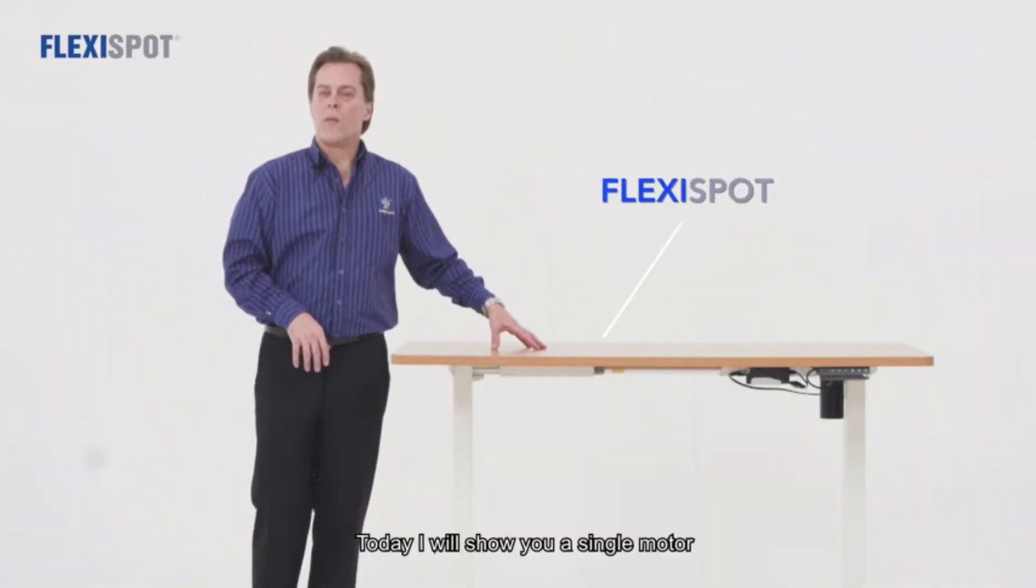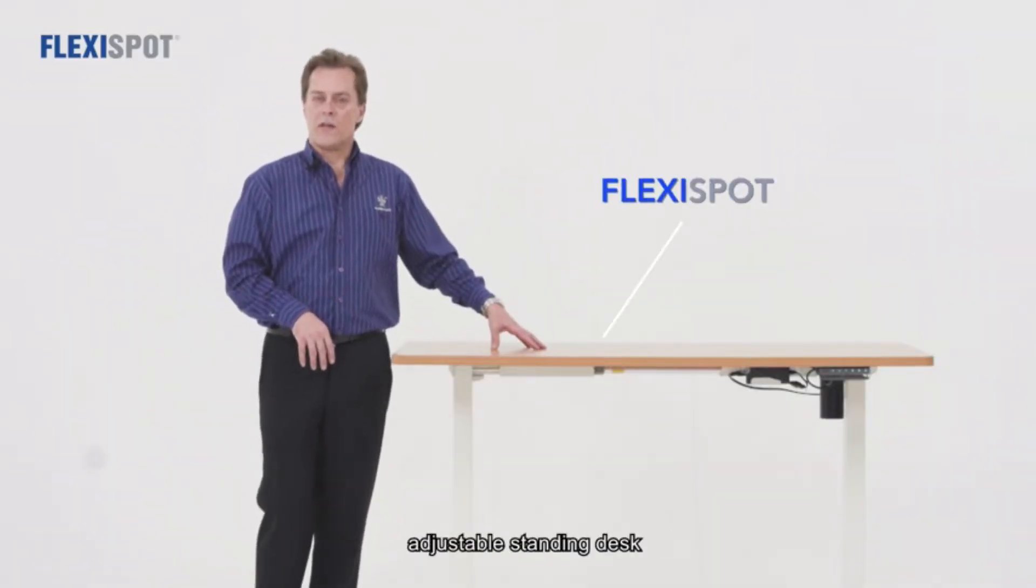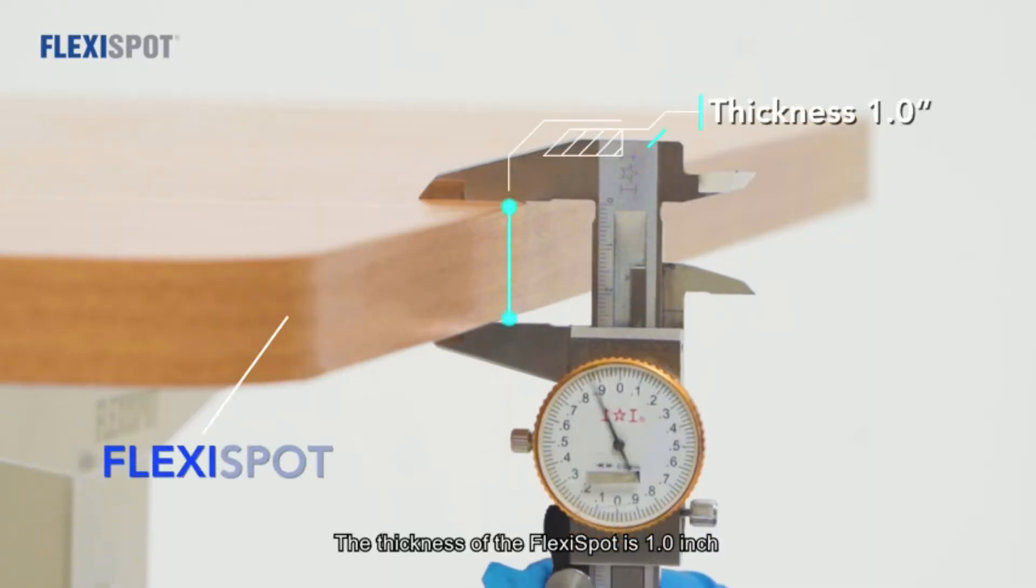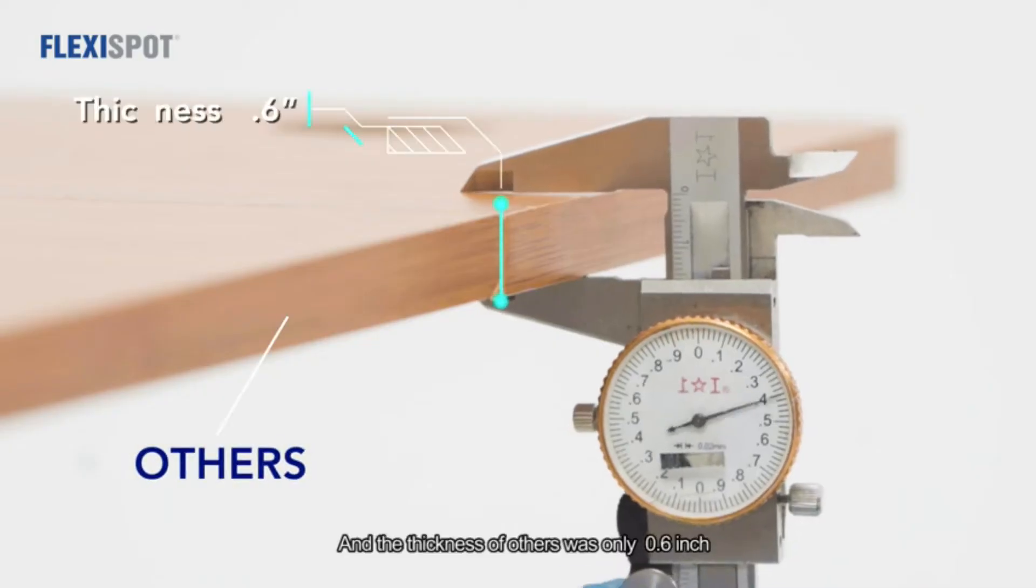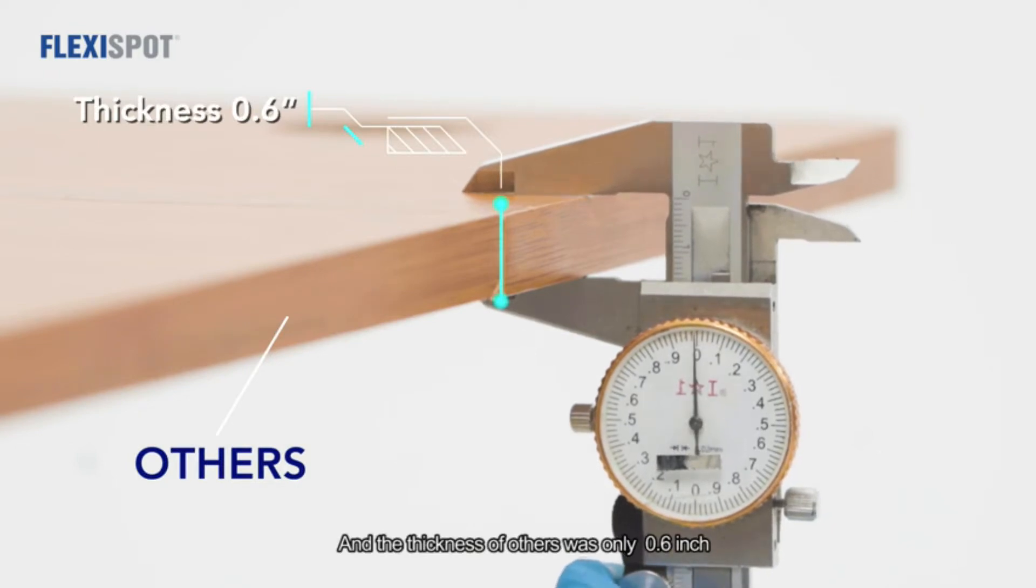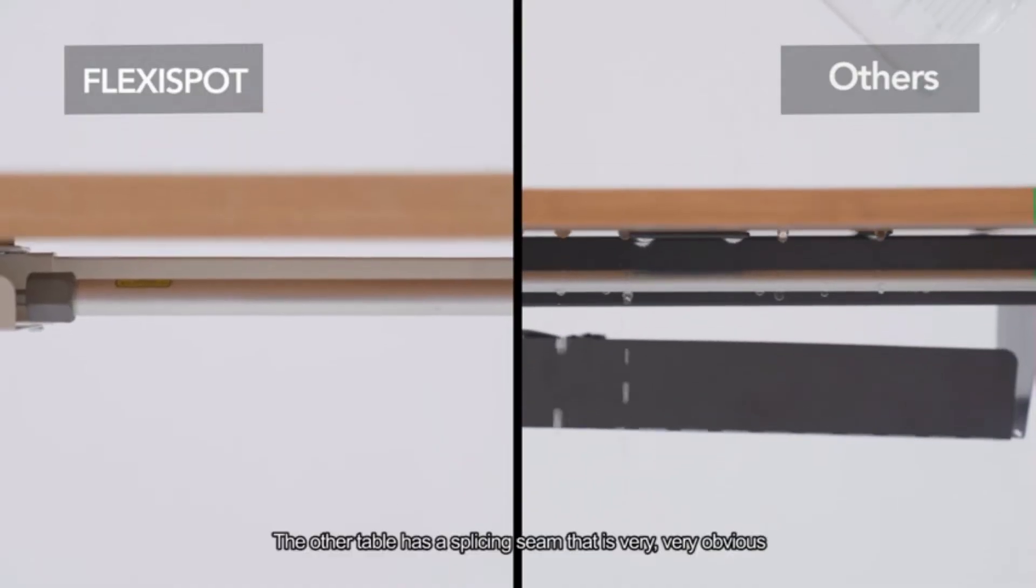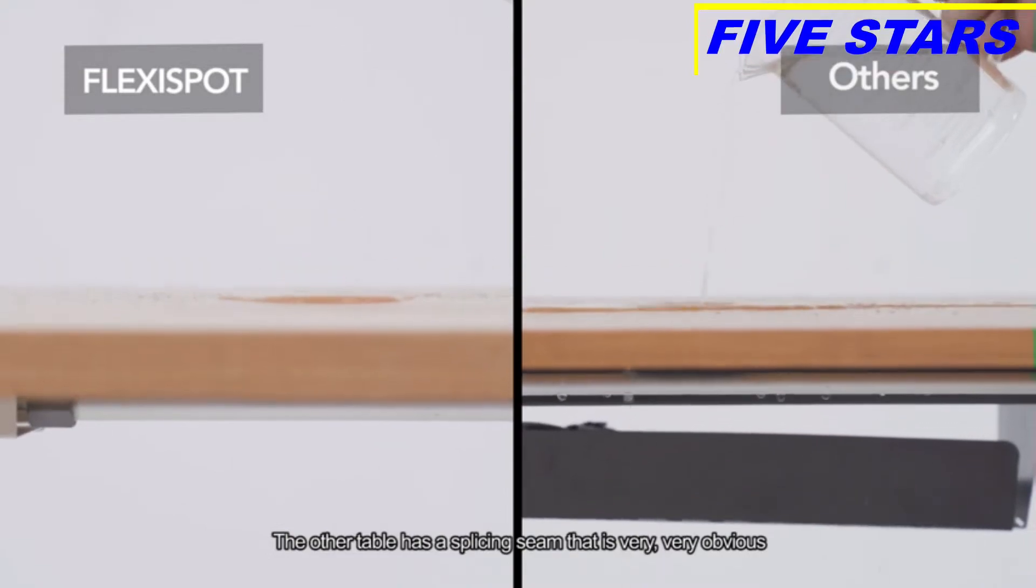Today I will show you a single motor adjustable standing desk. The thickness of the Flexispot is 25 millimeters and the thickness of the other is only 15 millimeters. The other table has a splicing seam that is very obvious.